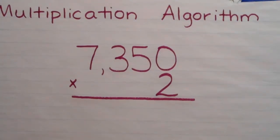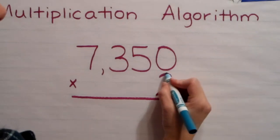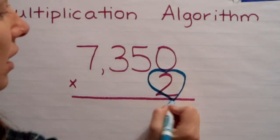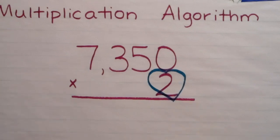Multiplication algorithm. A four-digit number times a one-digit number. Anytime when I'm multiplying, I like to start by putting a heart around my one-digit multiple. In this case, it's the number two.